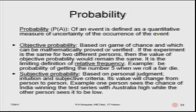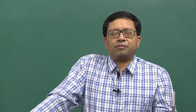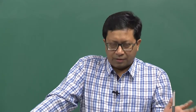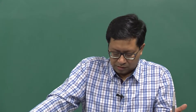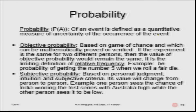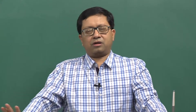For example, the probability of getting number 5 on a fair die is 1/6. In practice, you keep rolling: the numerator counts how many times 5 appeared, and the denominator is the total number of rolls. Subjective probability is based on personal judgment and intuition — its value changes from person to person. For example, one person sees India's chance of winning a test series against Australia as high while another sees it as low.